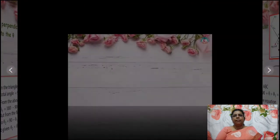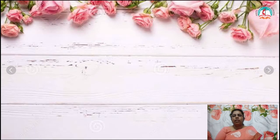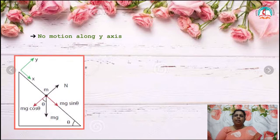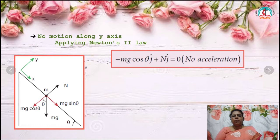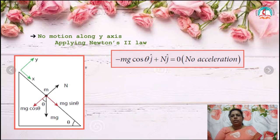Now we know how we got theta. There is no motion along the y-axis, meaning no acceleration along the y-axis, since the motion of the object is only along the x-axis. Applying Newton's second law in the y direction: since acceleration equals zero, force equals zero. The forces acting along the y-axis are: minus mg cos theta j-cap plus N j-cap, which equals zero. Taking j as common: j-cap bracket (N minus mg cos theta) equals zero. By comparing components, N equals mg cos theta.